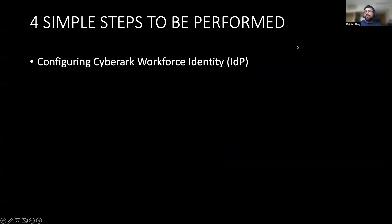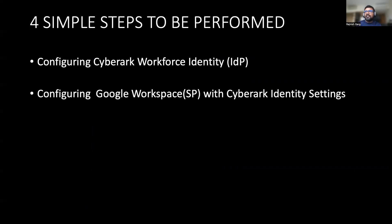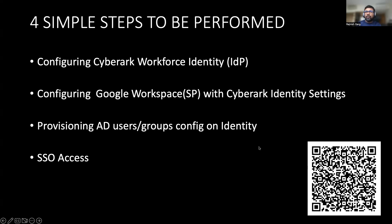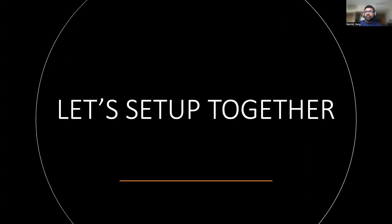In terms of the four different steps: the first step is we will look at how to set up Cybrox workforce identity, which is your IDP. Then as a second step, we will look at what configurations you have to do on the Google Workspace side. As a third step, we will do provisioning and some configuration on the Cybrox identity side, so that appropriate users and groups can be provisioned from AD to your Google Workspace. Last but not the least, we will do a single sign-on access test. To learn all these things, you can also go to the Cybrox documentation — it provides detailed step-by-step information.